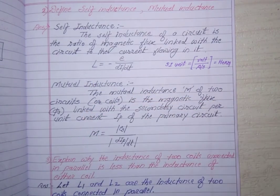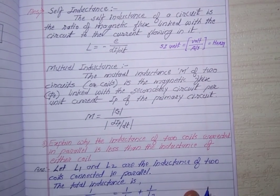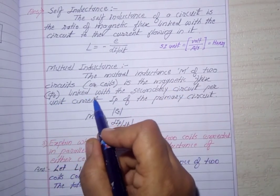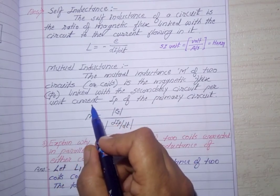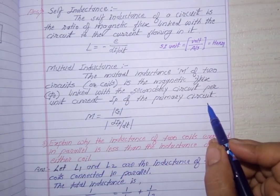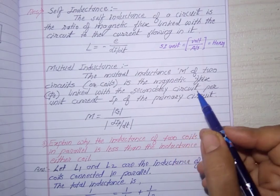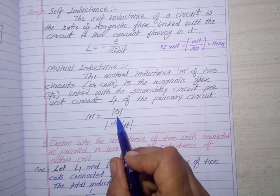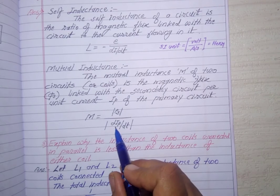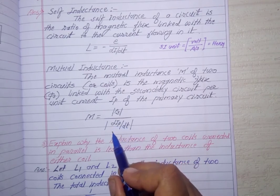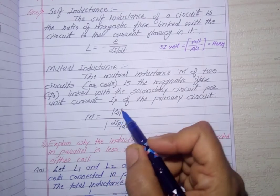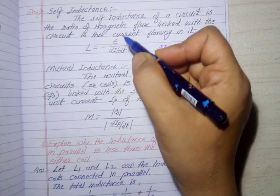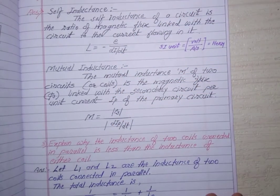The mutual inductance M of two circuits or two coils is the magnetic flux linked with the secondary circuit per unit current I_P of the primary circuit. It is also the ratio of induced EMF produced in the secondary coil to the rate of change of current in the primary coil - current in the primary coil and EMF produced in the secondary coil.